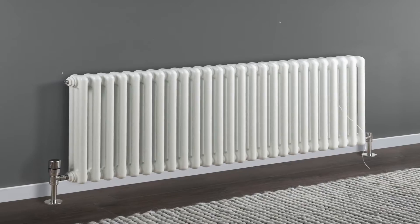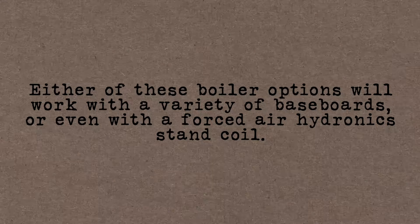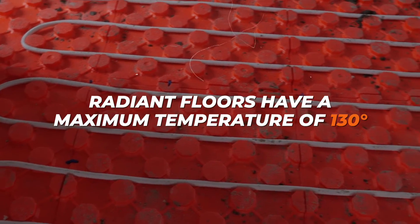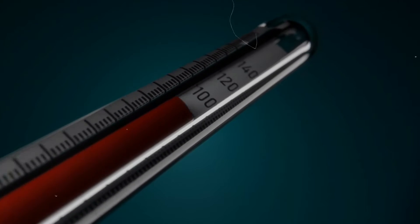Let's talk about the types of radiators and baseboards in your home, or perhaps you have radiant heated floors. Either boiler option will work with a variety of baseboards or even a forced air hydronic coil — you just adjust the set point temperature and how the system is piped. Radiant floors have a maximum temperature of 130 degrees, so with a properly piped secondary loop and a mixing valve, you can ensure the floor temperature stays within range. Baseboards typically run at 180 degrees.